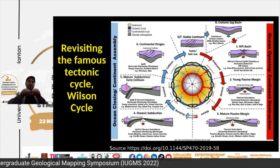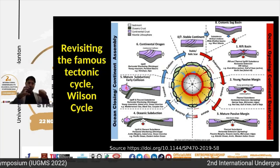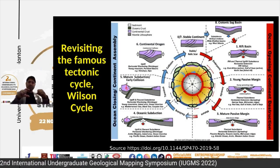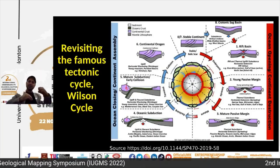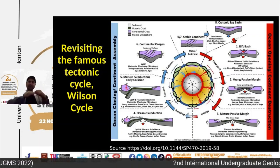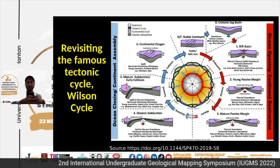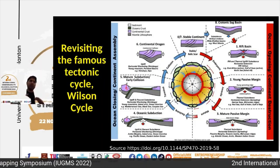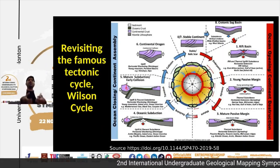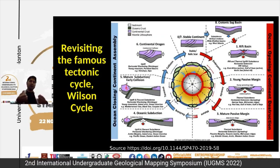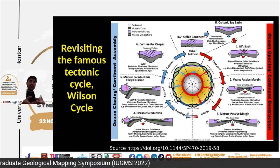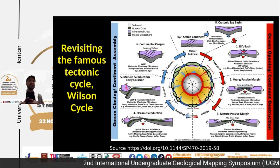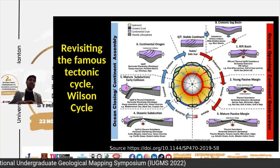The new oceanic crust gets consumed at what we call the subduction zone — that's where Indonesia is at the moment. According to the Wilson cycle, Indonesia is at the stage where subduction is happening. The rifting stage has already passed. This is an example of the second stage of the Wilson cycle, with oceanic subduction occurring.